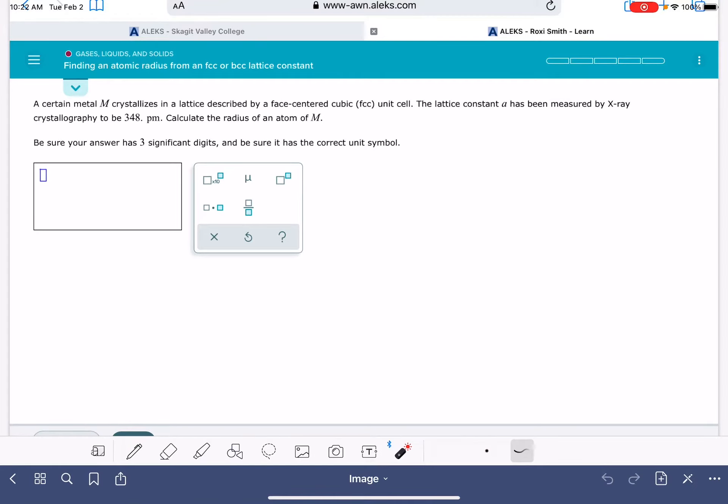In this video, we're going to go over the Aleks problem called finding an atomic radius from an FCC or BCC lattice constant. Just like the problem states, here we are going to be given a lattice constant A, the little a, and we're going to use that information to calculate the radius of an atom.